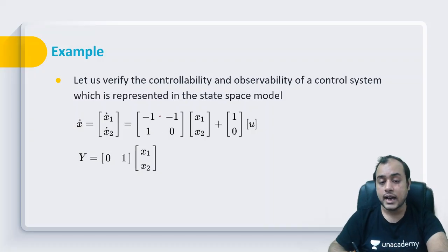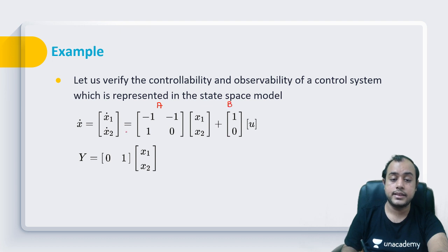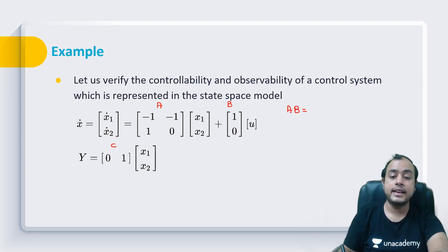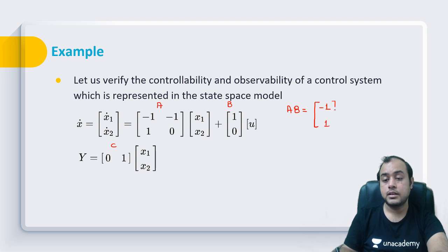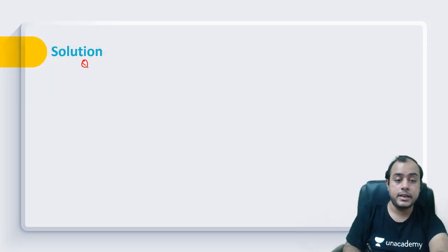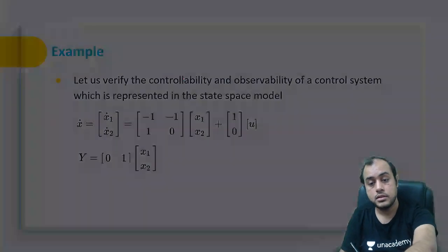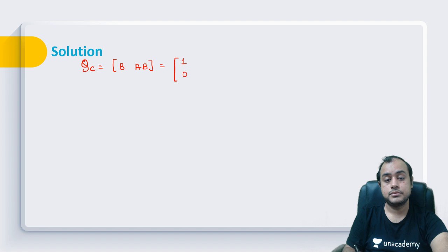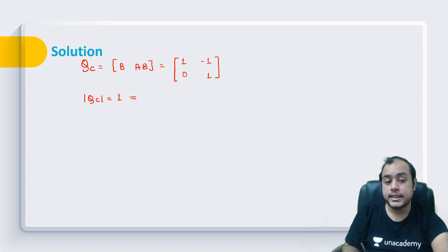Let us take an example. Suppose we have a system with matrix A, matrix B, matrix C, and D is missing. For Kalman's test for controllability I need matrices A and B. If I multiply A into B: the result is [-1, 1]. For observability I need C and CA. With C = [0, 1], CA works out to [1, 0]. The controllability matrix is formed as [B | AB].